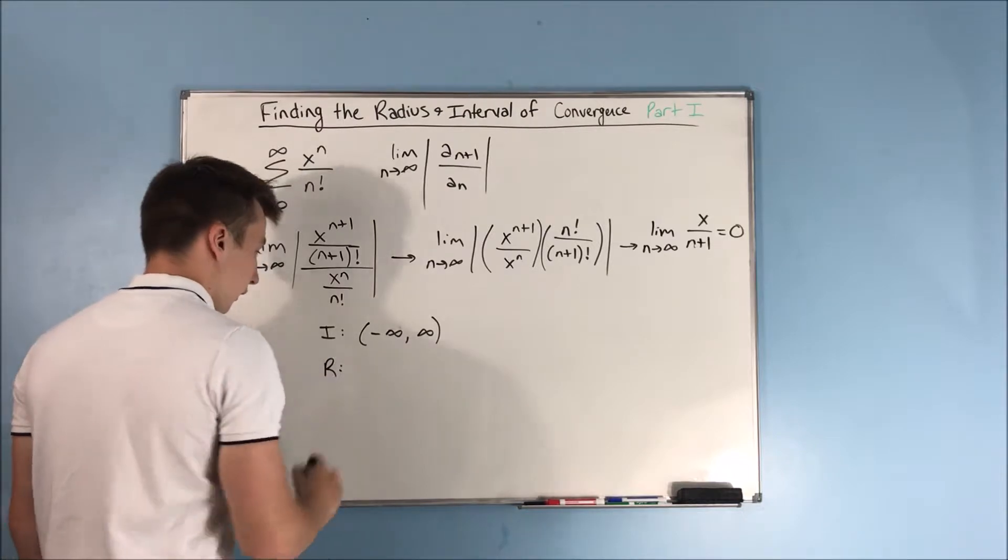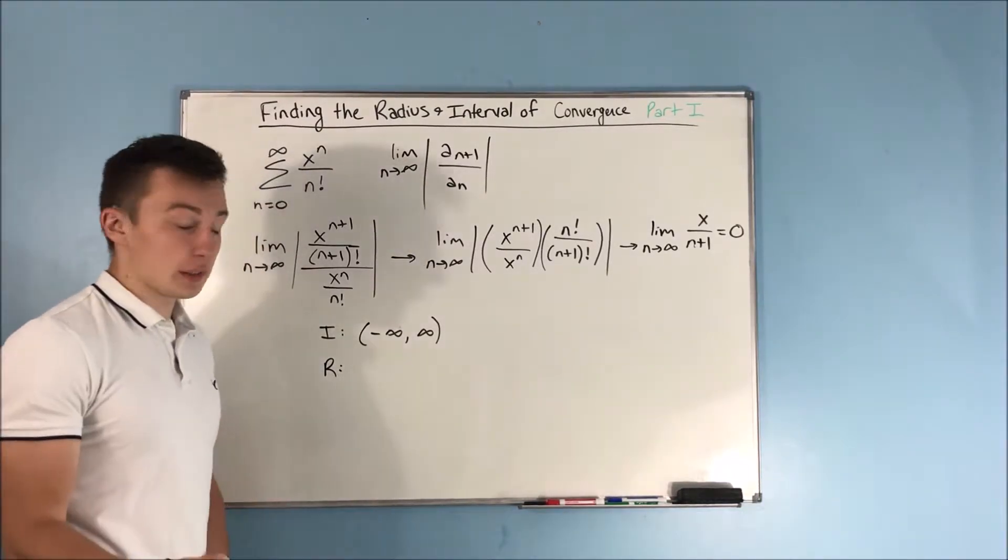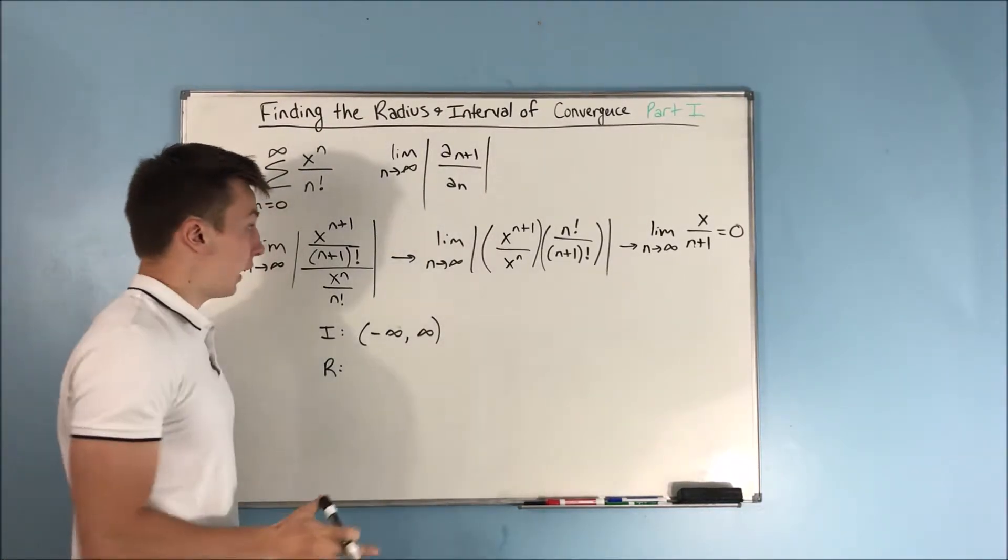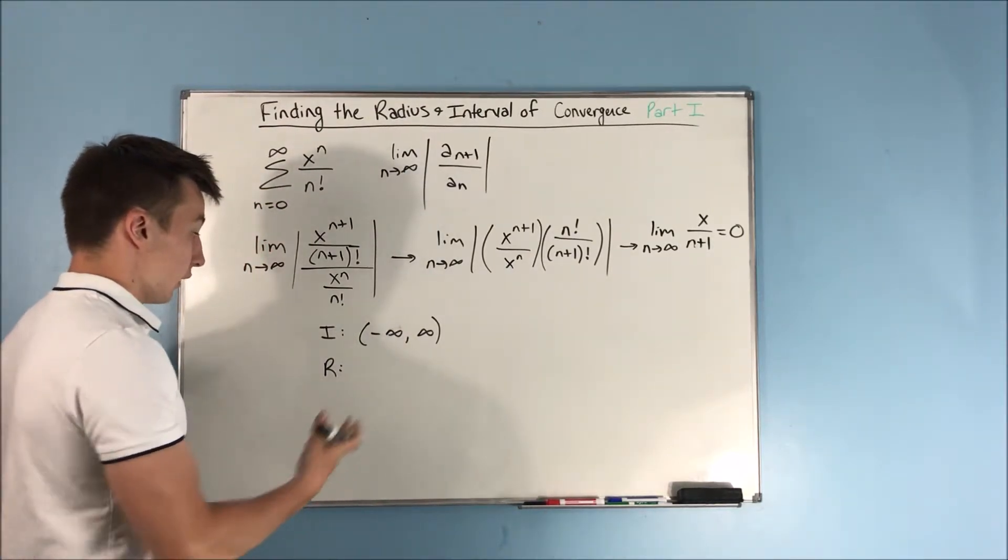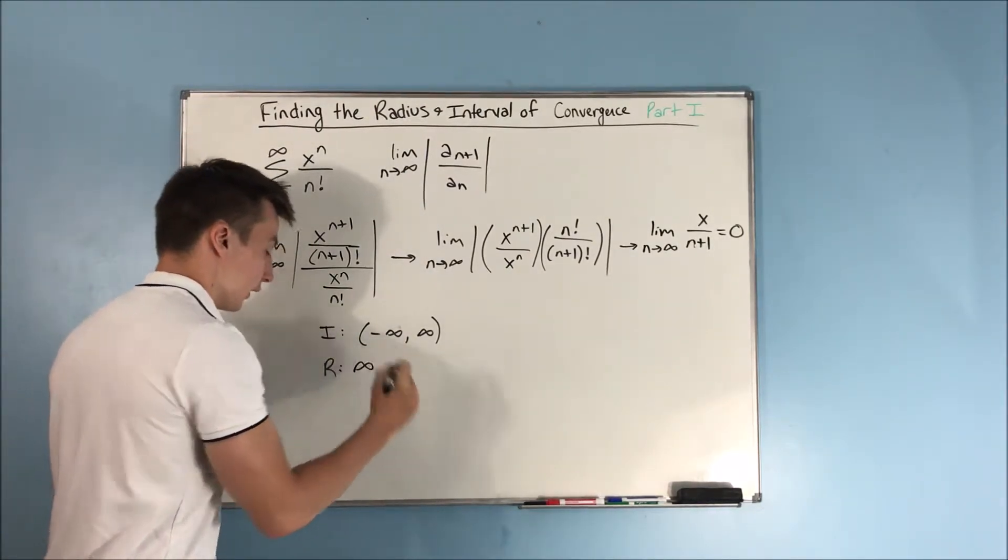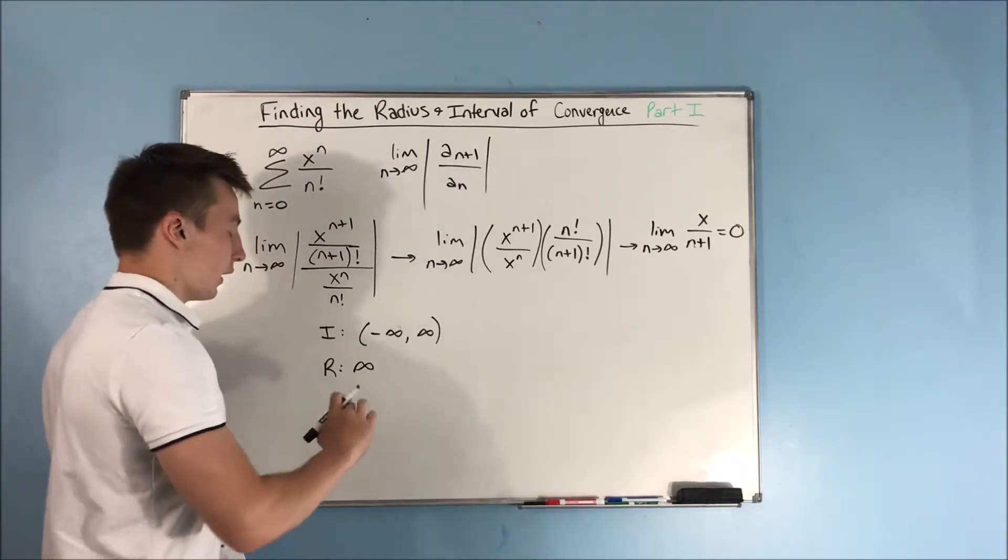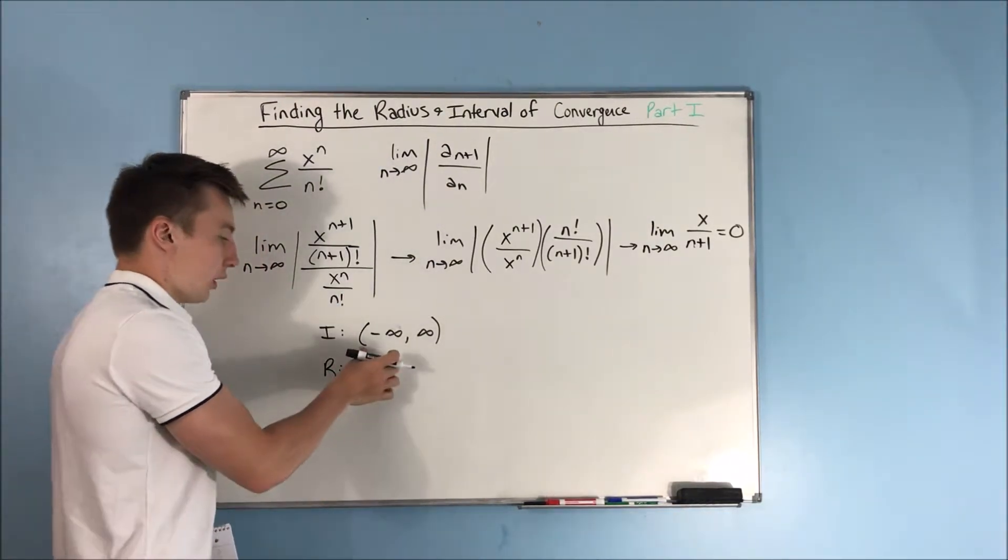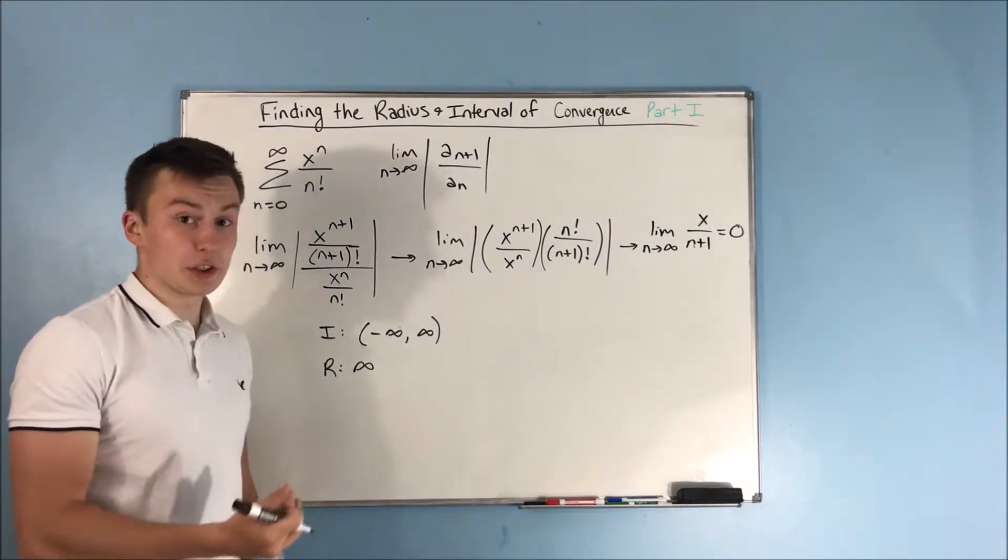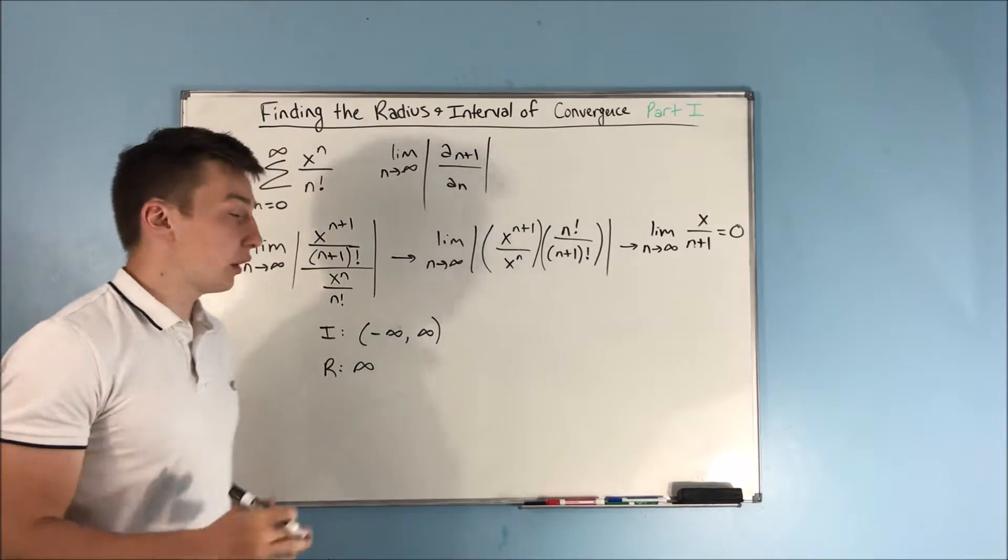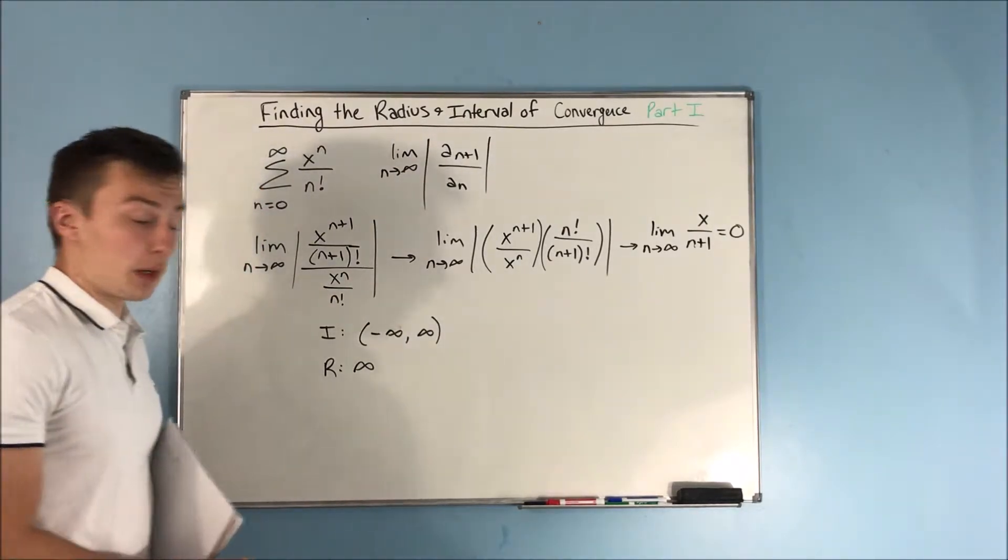Now your radius of convergence, well, first off, we know that this is centered at 0. This is centered at 0, and that means that our radius is just going to be infinite. And it goes without saying that when your interval of convergence is infinite, your radius of convergence is also going to be infinite. That does it for our first problem.